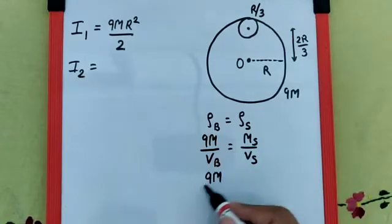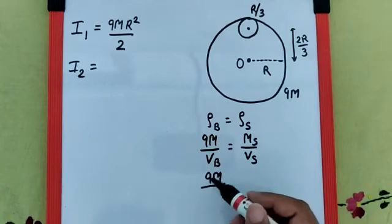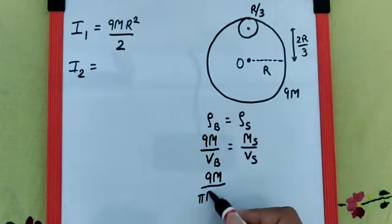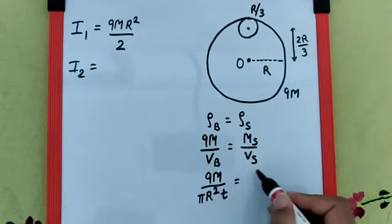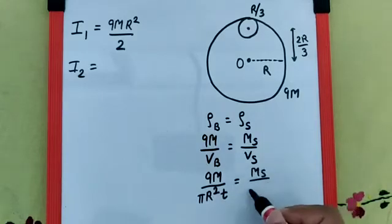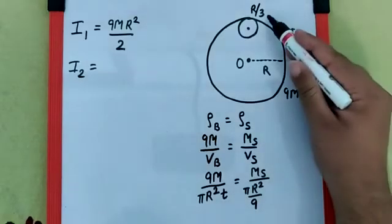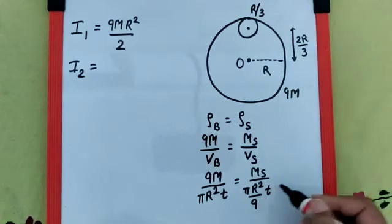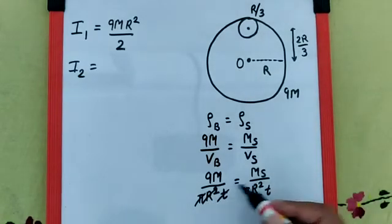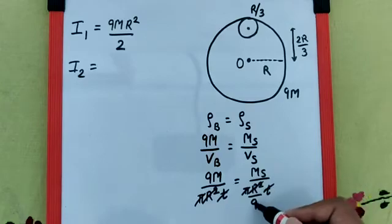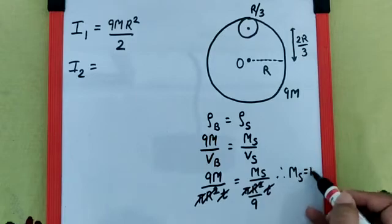That means 9m divided by volume, which is area times thickness. Area is πr² and thickness is t. For the smaller disk, the area is πr²/9 because the radius is r/3, times thickness t. So πr²/9 and t cancel, the 9s cancel, which means the mass of the smaller disk is m.